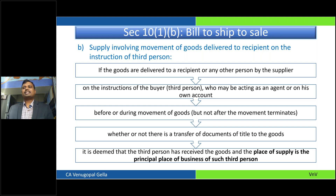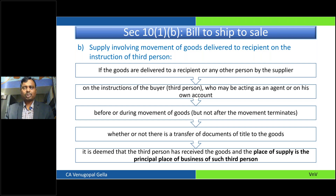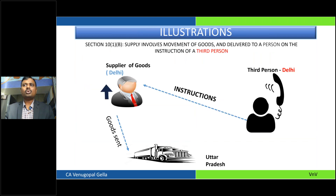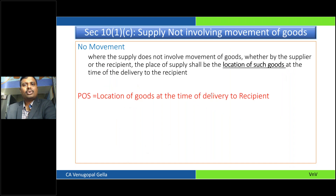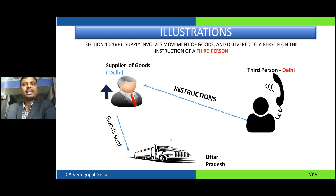For example: a person in Delhi is calling a supplier in Delhi asking them to send goods to Uttar Pradesh. So from Delhi, goods are moving to UP. Under Section 10(1)(a) alone, place of supply would have been UP. But here, the person asking to send the goods is in Delhi. So wherever the place of business of the third person is — Delhi in this case — that would be the place of supply. People often get confused thinking place of supply will be wherever goods are moving, but that is not correct.